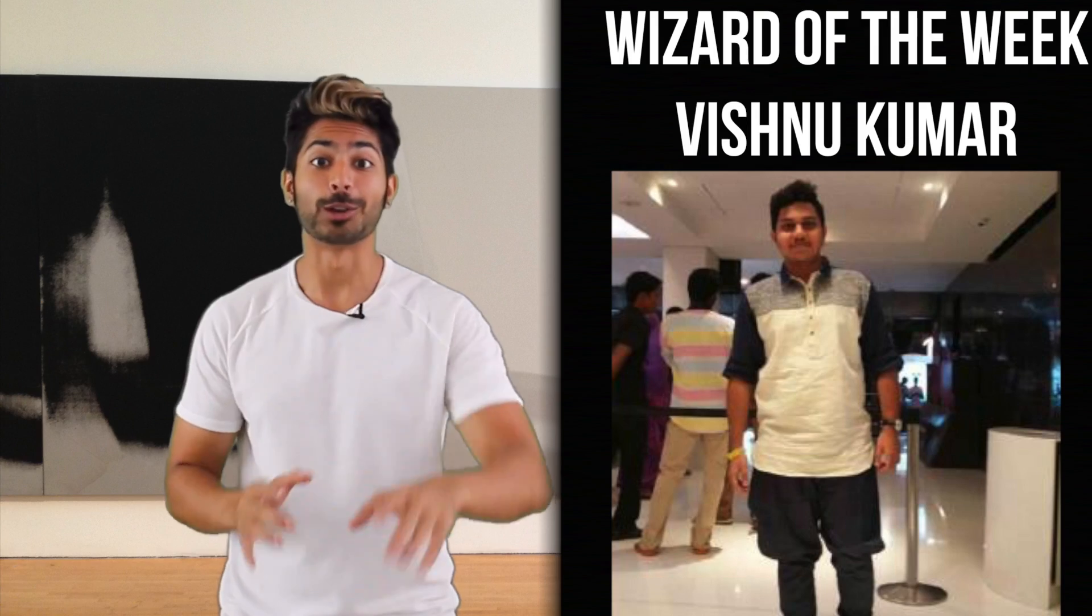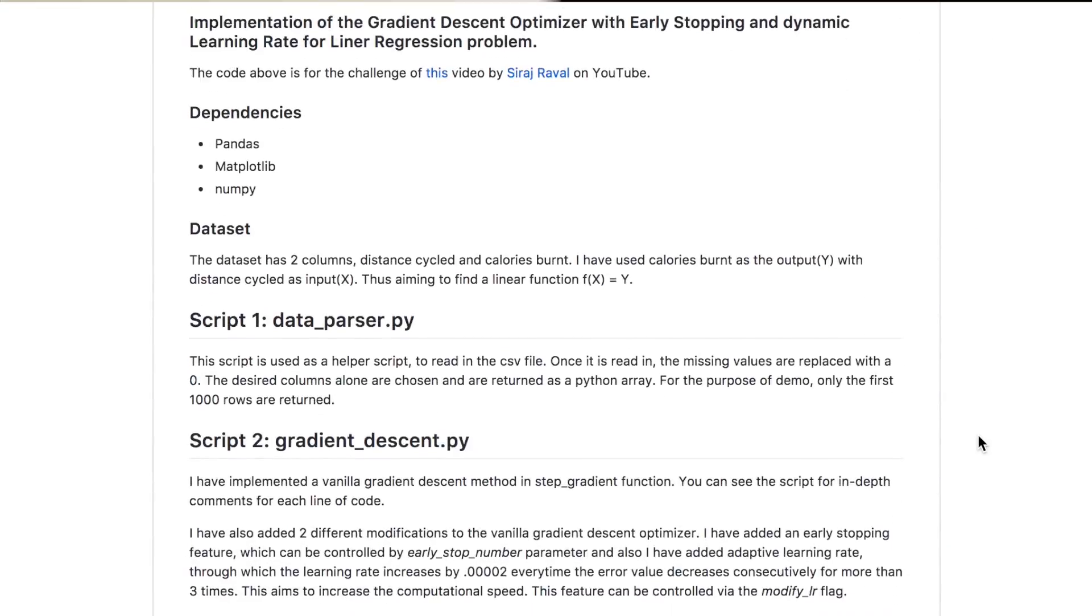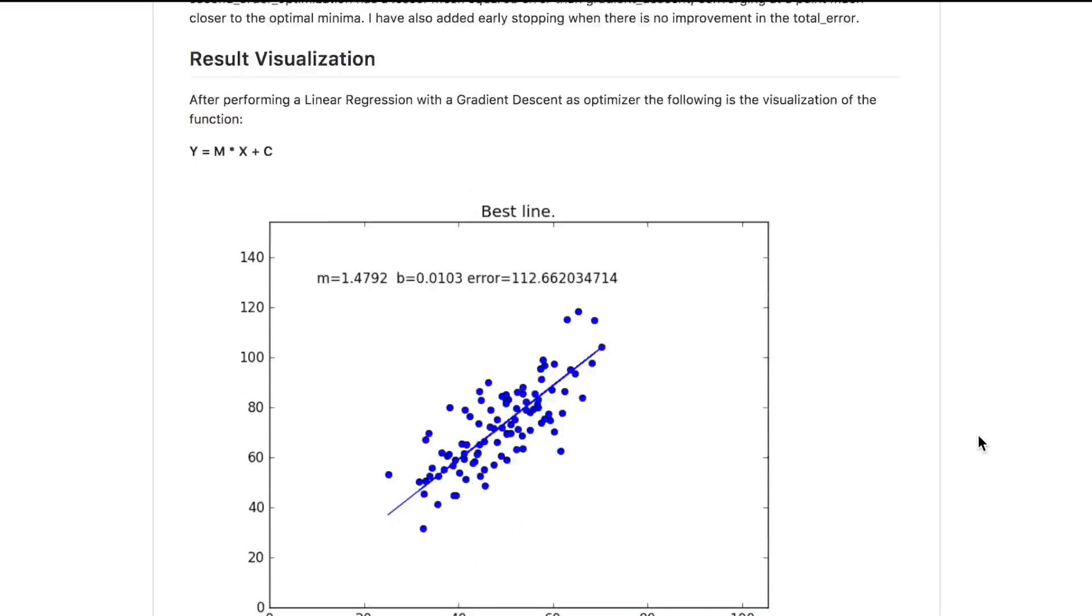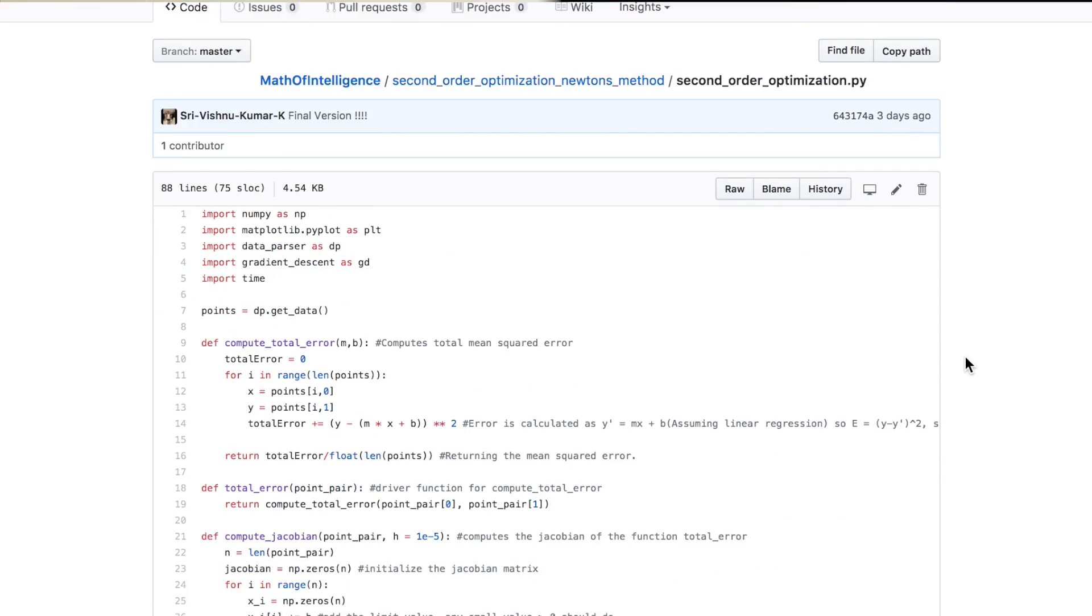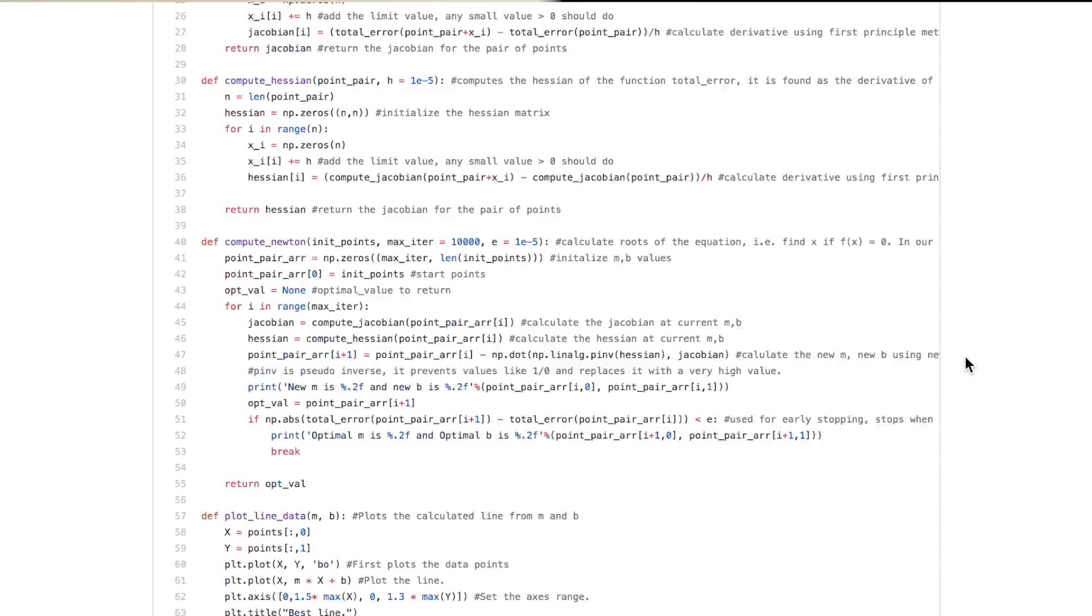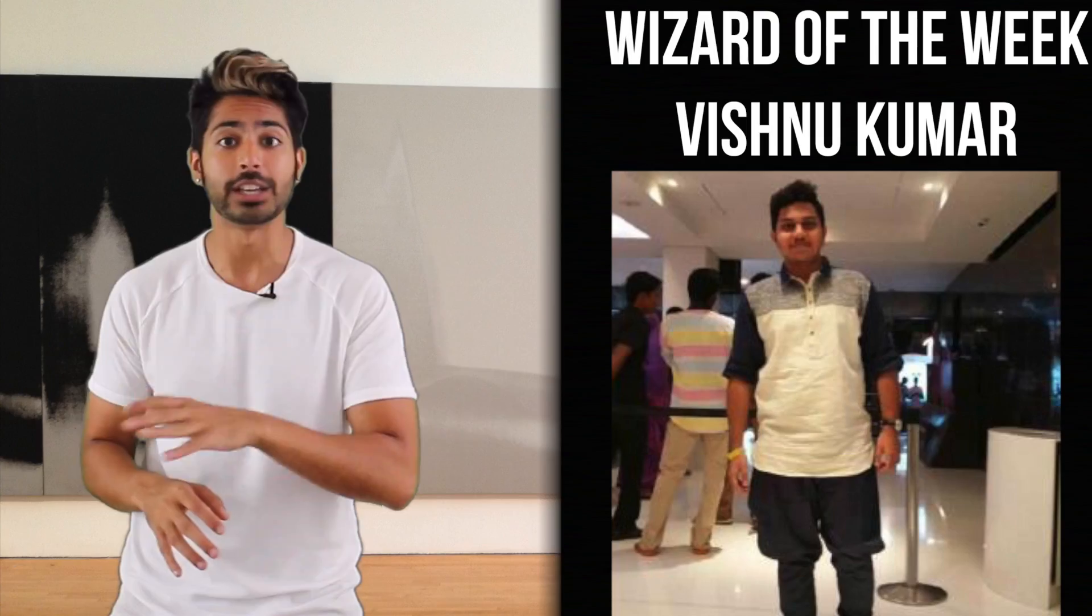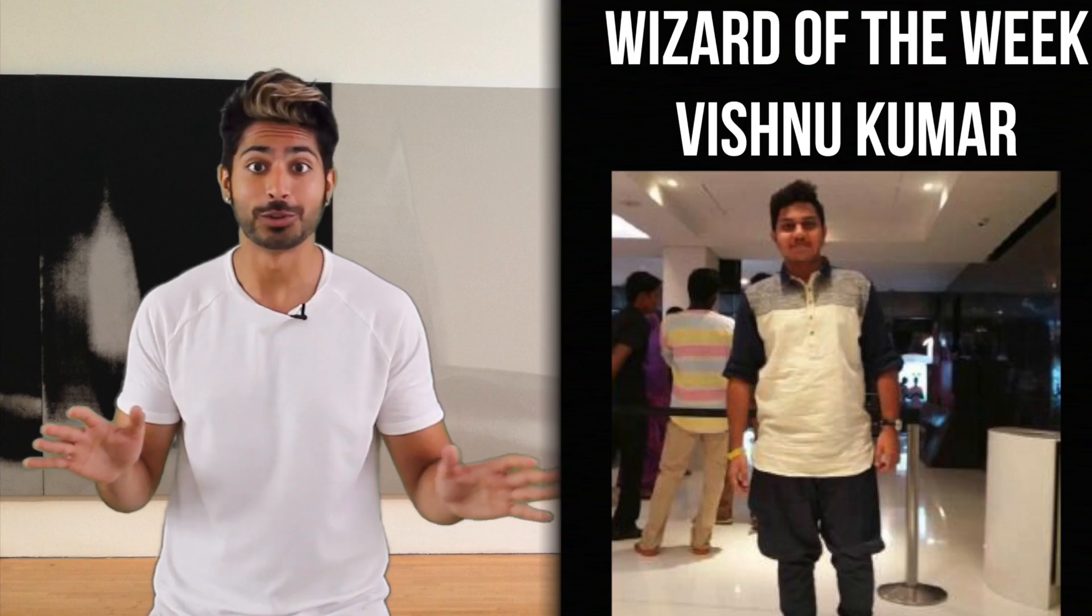The Wizard of the Week award goes to Vishnu Kumar. He implemented both gradient descent and Newton's method to create a model able to predict the amount of calories burnt for cycling a certain distance. The plots are great and the code is architected very legibly. Check it out. Amazing work, Vishnu.